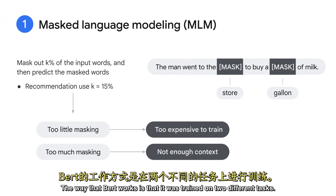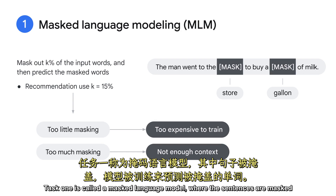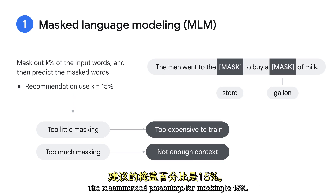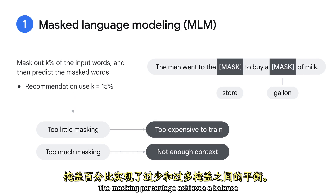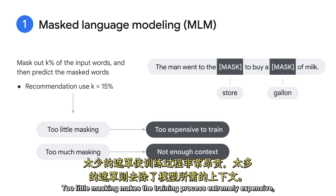The way that BERT works is that it was trained on two different tasks. Task one is called a masked language model, where the sentences are masked and the model is trained to predict the masked words. If you were to train BERT from scratch, you would have to mask a certain percentage of the words in your corpus. The recommended percentage for masking is 15%. The masking percentage achieves a balance between too little and too much masking. Too little masking makes the training process extremely expensive, and too much masking removes the context that the model requires.